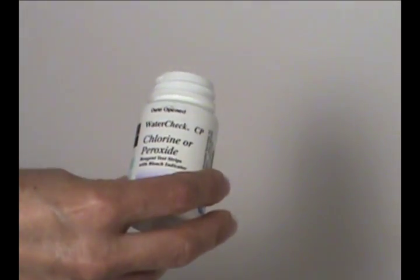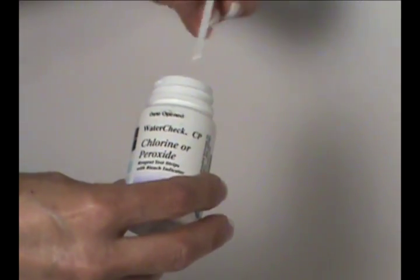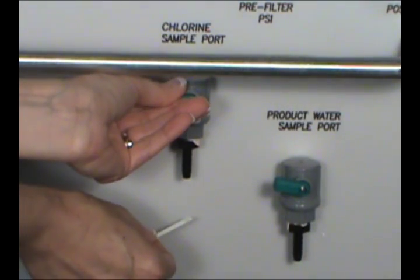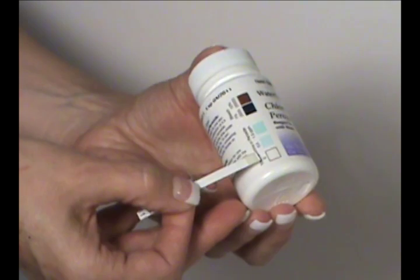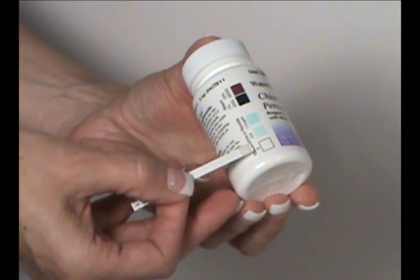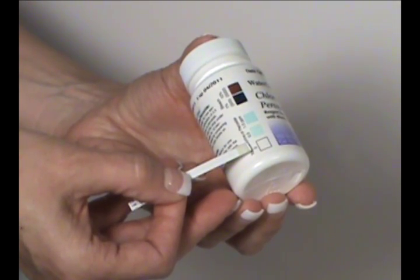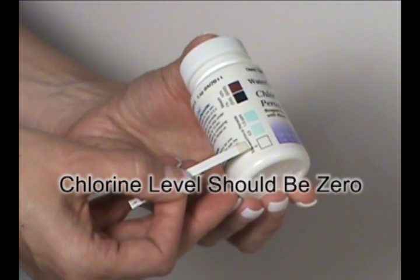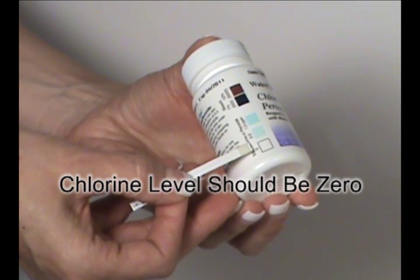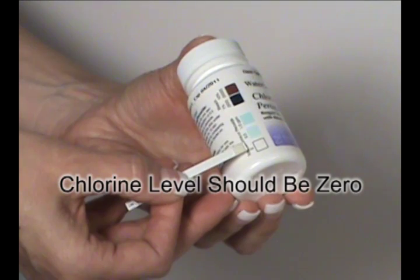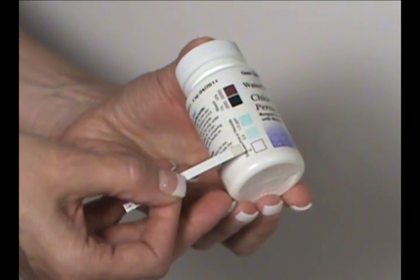Remove a chlorine strip from the container. Wet the sample strip from the chlorine sample port. Compare the color test results on the side of the container. The chlorine level should be zero. If the chlorine level is not satisfactory, the chlorine filters should be replaced.